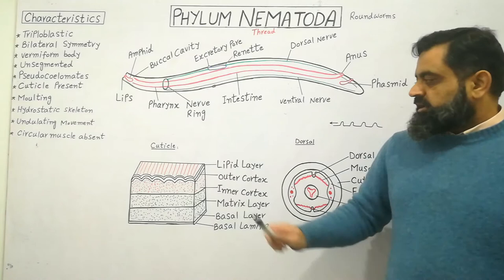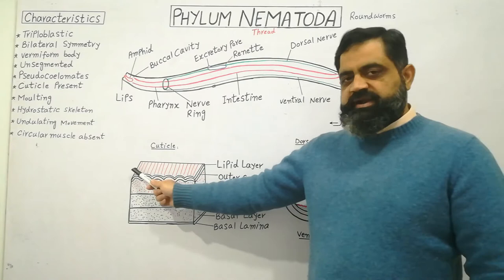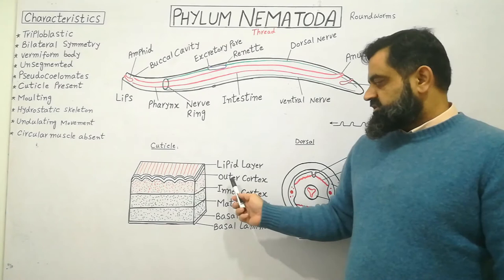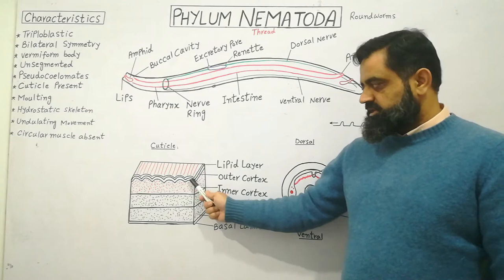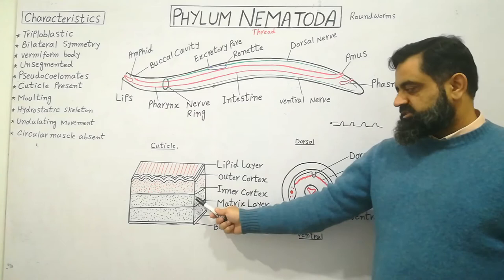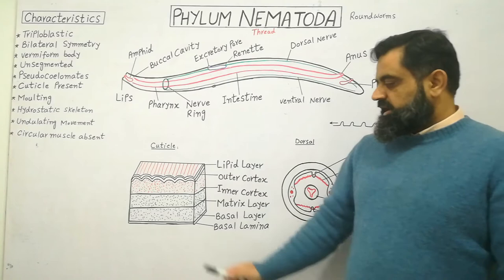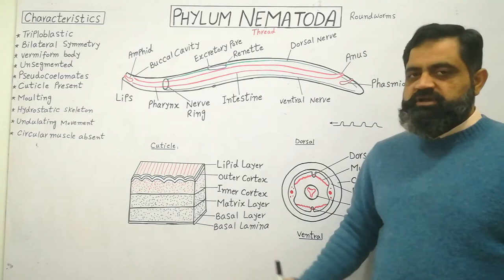The outermost layer of the cuticle is the lipid layer, shown in the red area. Just beneath the lipid layer there is the cortex, which can be divided into two layers: an outer layer and an inner layer. Beneath the cortex is the matrix layer, which is the main layer of the cuticle. Beneath the matrix layer is the basal layer, the innermost layer of the cuticle. Just under the basal layer is a membrane known as the basal lamina, which separates the cuticle from the epidermis.